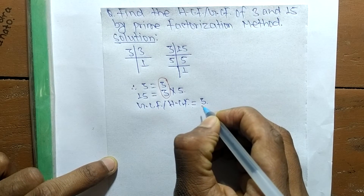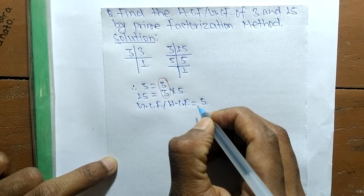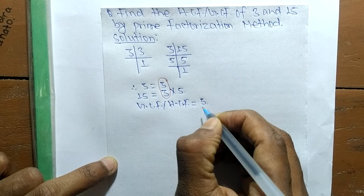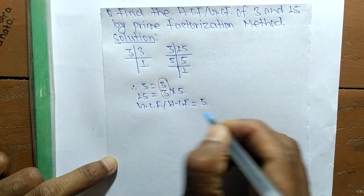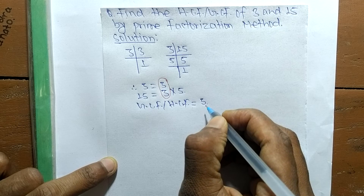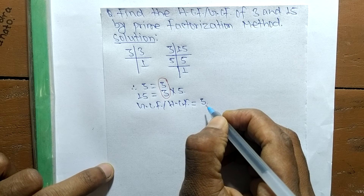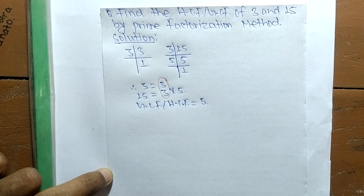So the GCF or HCF of 3 and 15 is 3. That's all for today — thanks for watching.